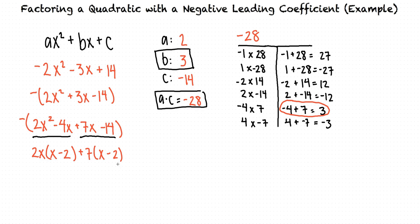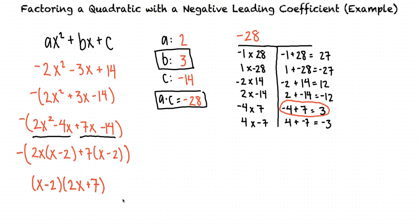We can't forget that we have a negative outside the entire thing. From here, we can determine the final factorization of the original quadratic expression. One factor will be the quantity x minus 2, because those two are the same. The other factor will have the two terms out front of the quantities — 2x and 7. And once again, we can't forget our negative out in front.